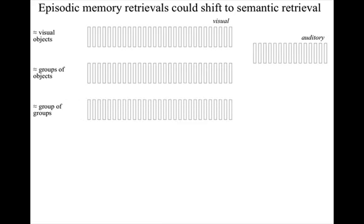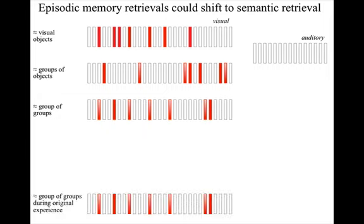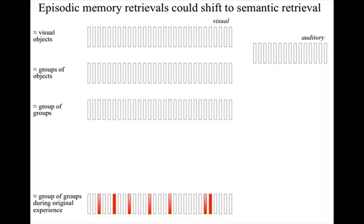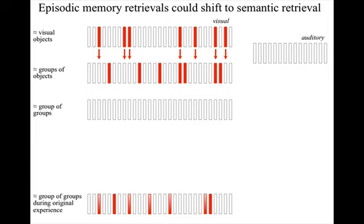In the high-level model we were using earlier, the pattern of column activation during a novel experience can later be reconstructed using trigger words that directly activate auditory columns, and these auditory columns have recommendation strengths in favor of indirect activation of visual columns on the basis of frequent past simultaneous activity.